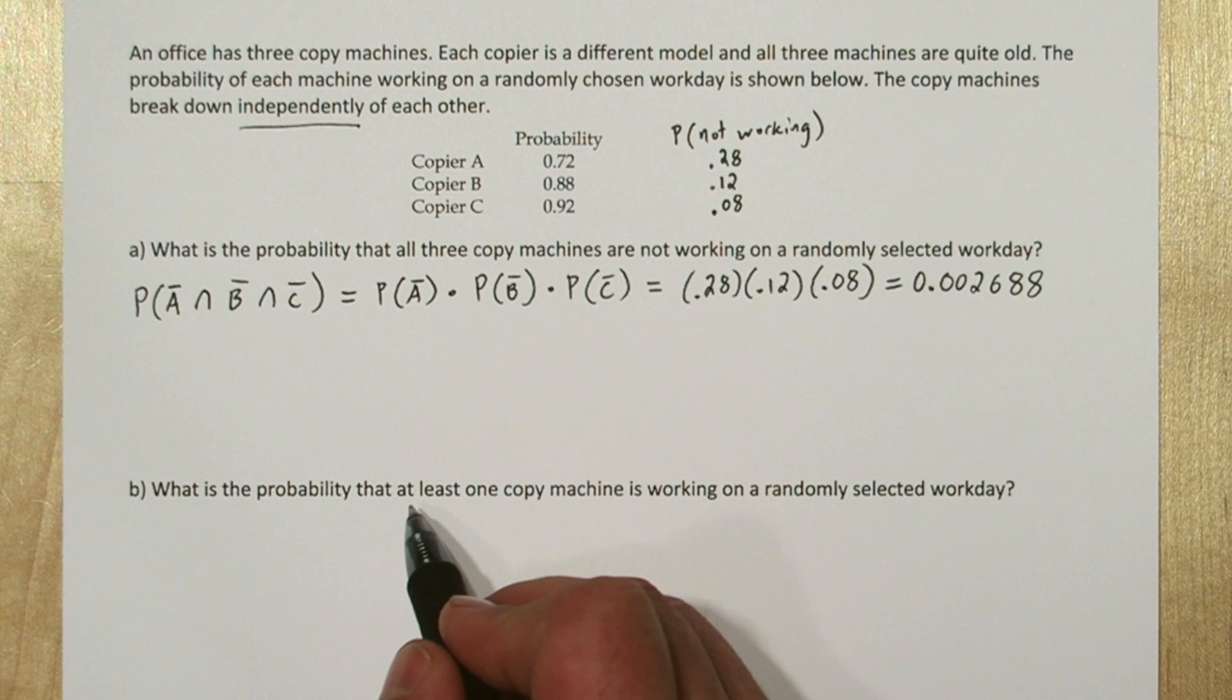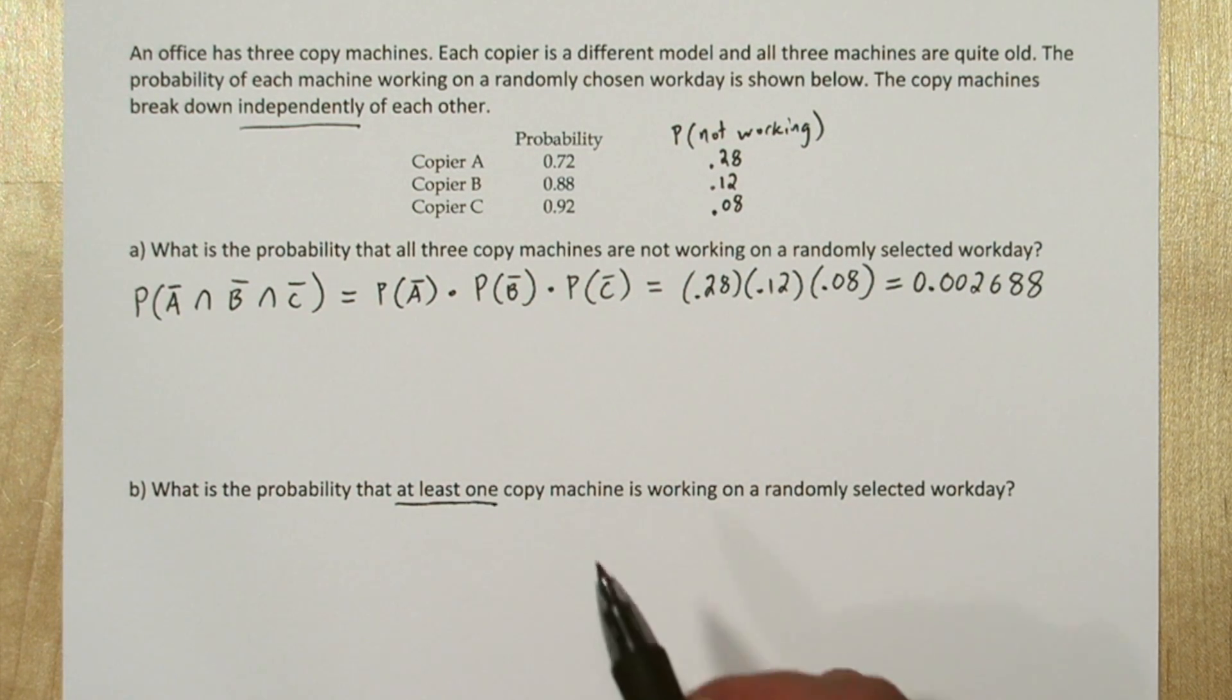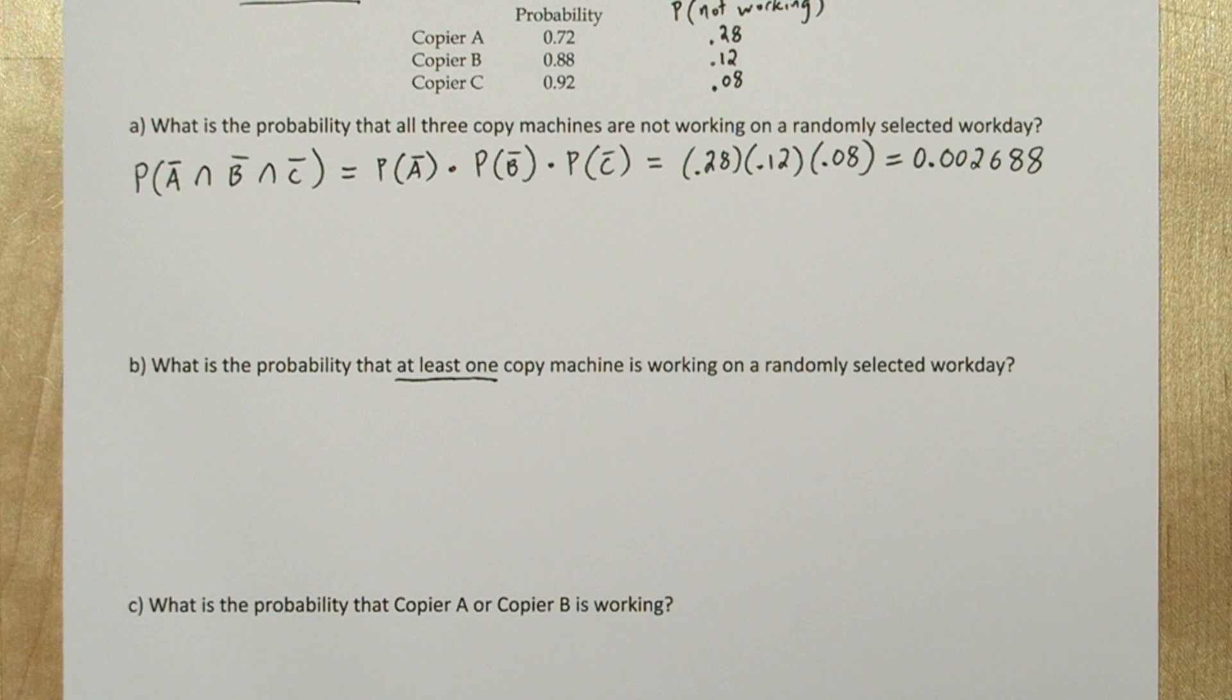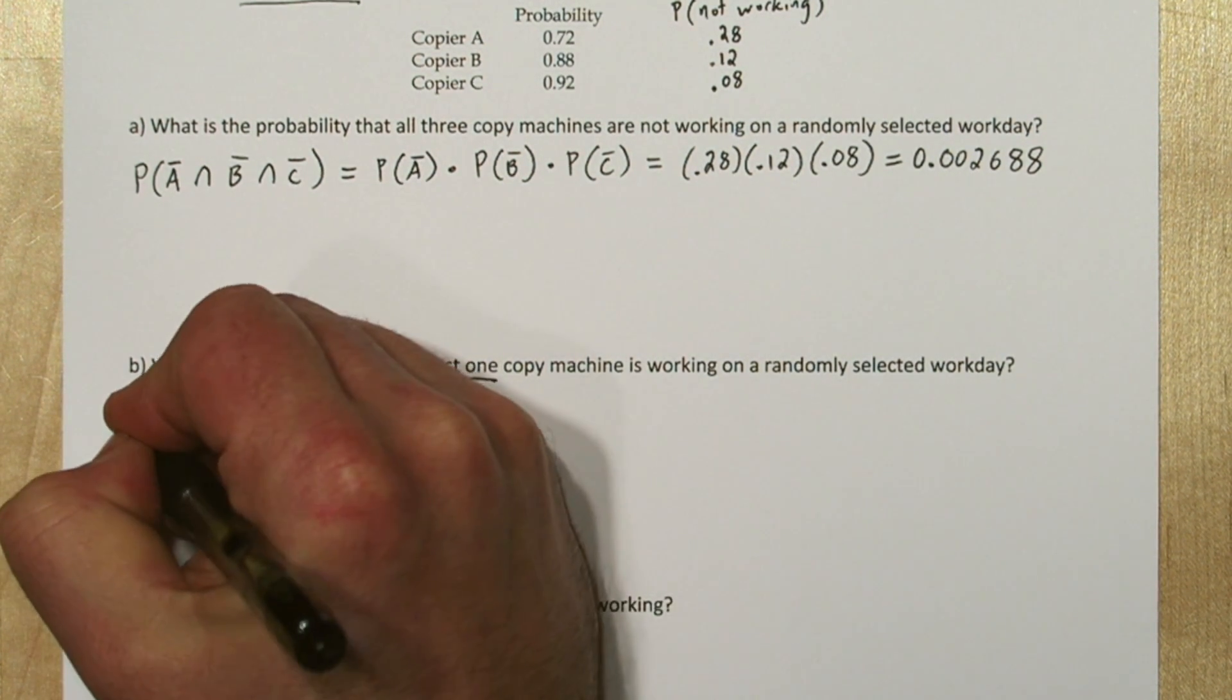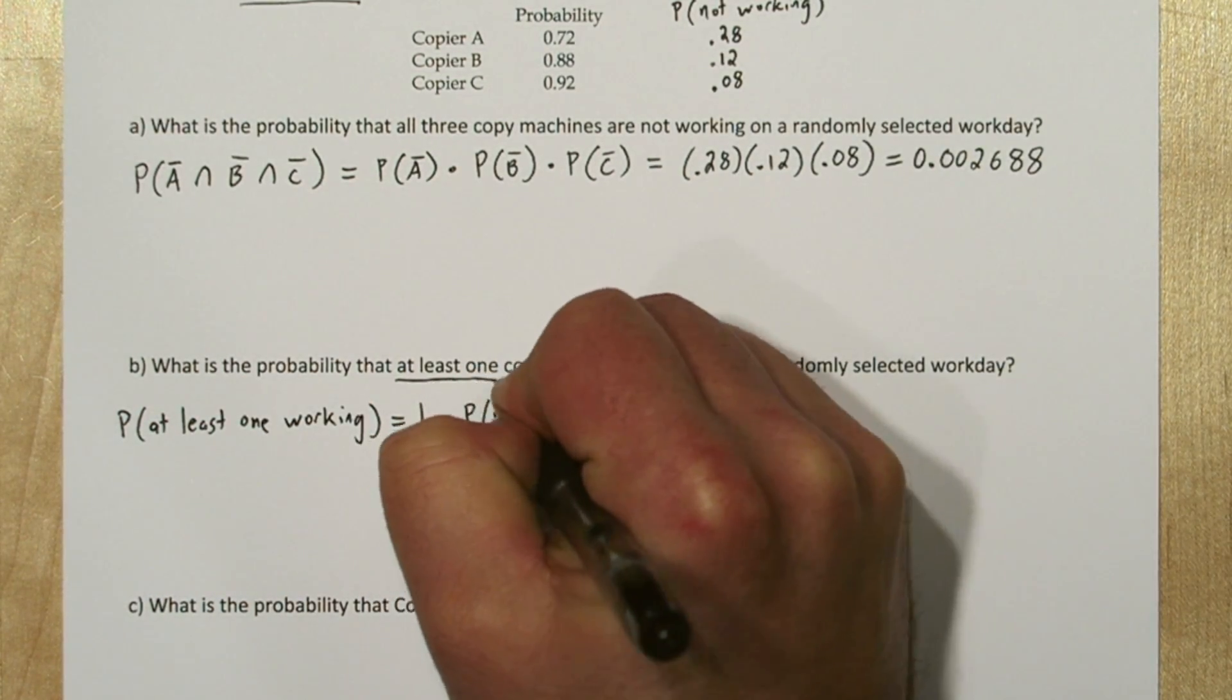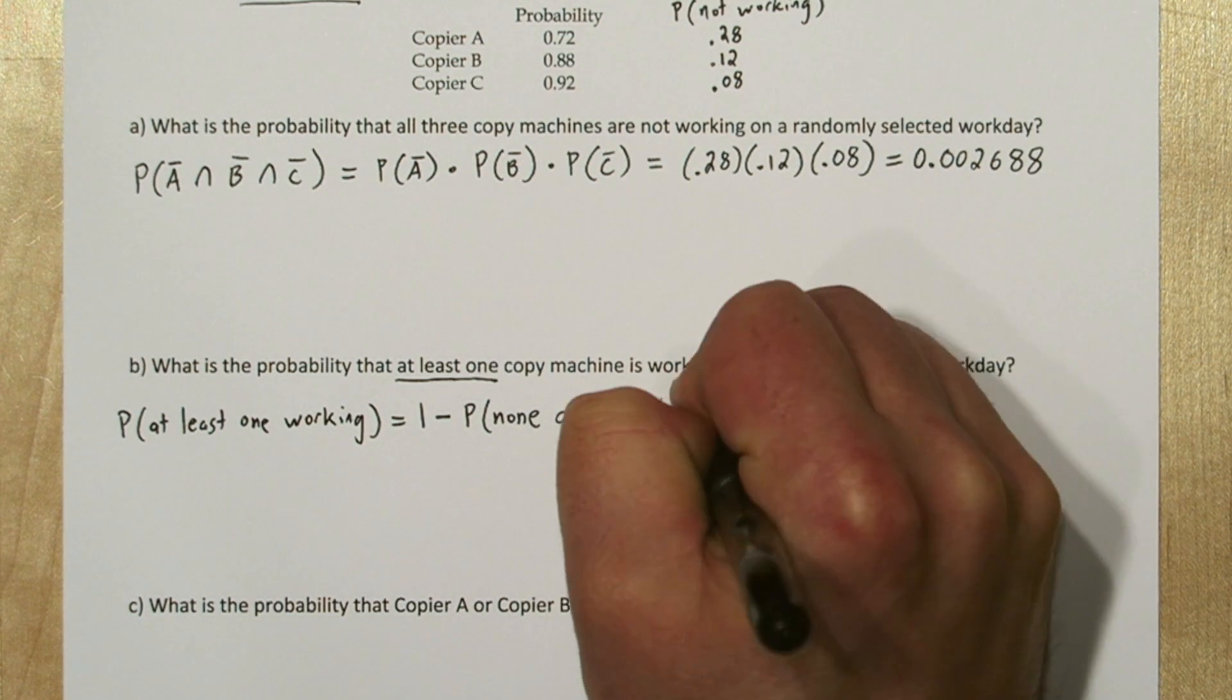Now in part B there's this key phrase, at least one. Anytime you see at least one in a probability problem, it's probably best to approach it using the complement. So the probability that at least one is working is the same thing as one minus the probability of its complement.